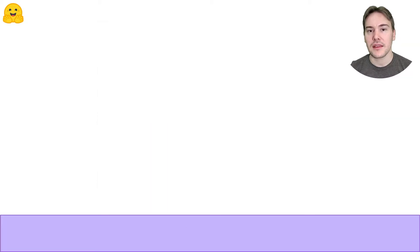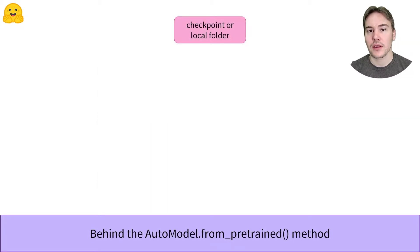Behind the scenes, this API can take the name of a checkpoint on the hub, in which case it will download and cache the configuration file as well as the model weights file. You can also specify the path to a local folder that contains a valid configuration file and a model weights file.